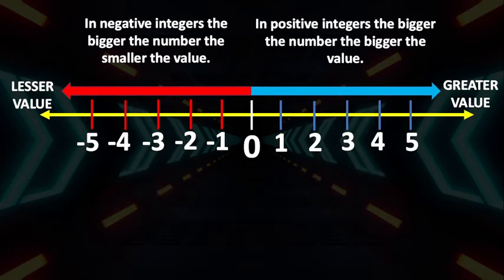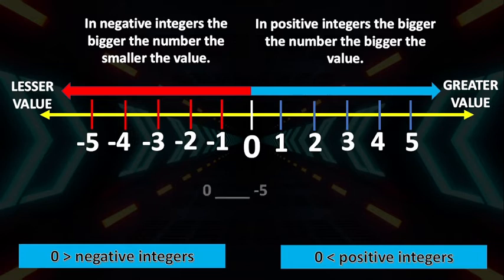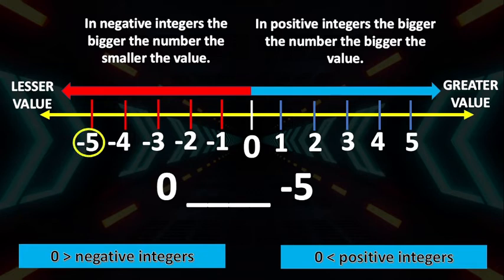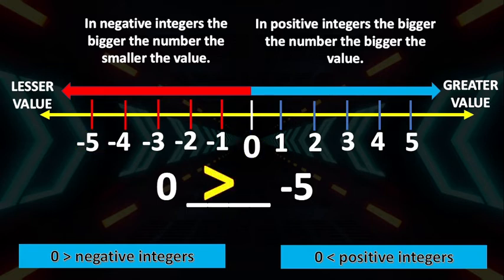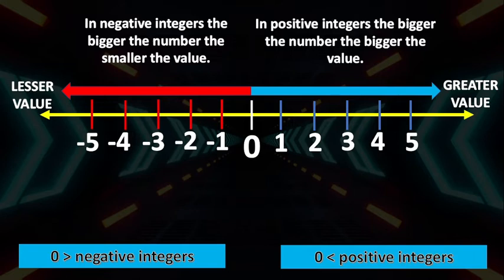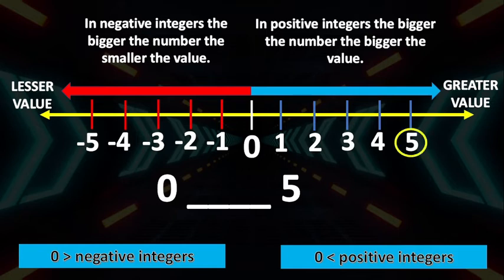Let's try an example. Let's compare 0 and negative 5. Since negative 5 is a negative integer and can be found to the left of 0, this means that 0 is greater than negative 5. Let's have another example. Let's compare 0 and positive 5. Since 5 is positive and can be found to the right side of 0, this means that 0 is less than positive 5.